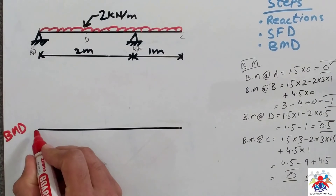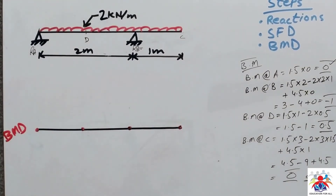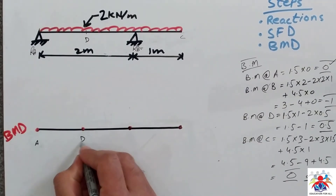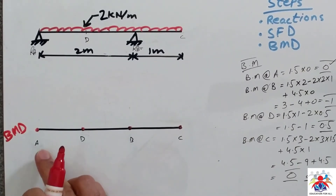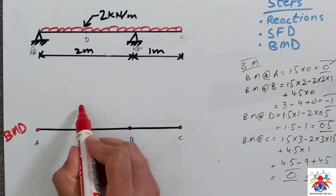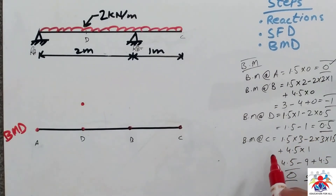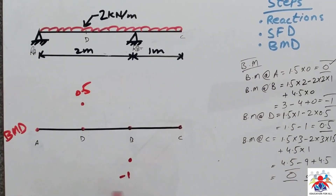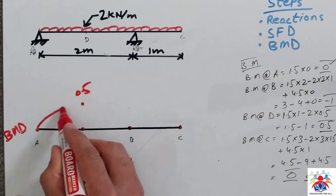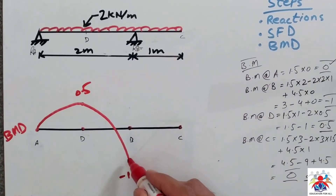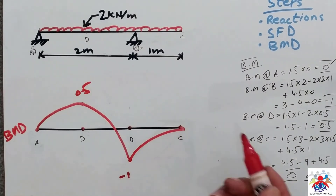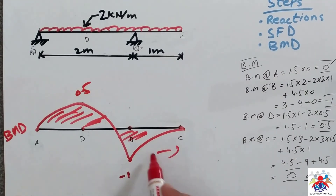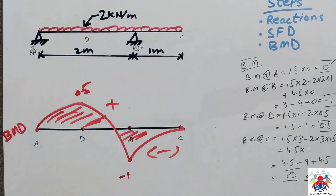Based on these numbers we draw the bending moment diagram. We have four points: A, D, B, and C. At A we have 0; at D we have 0.5; at B we have minus 1; at C we have 0. We connect these points with a parabolic line. The section from B toward C is the negative zone and the section A to B is the positive zone. That is how you draw a bending moment diagram for this type of overhanging beam. Thank you for watching — please don't forget to subscribe.